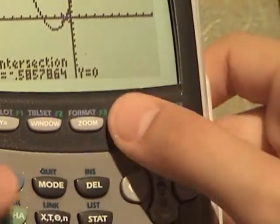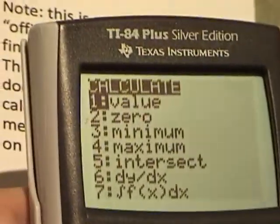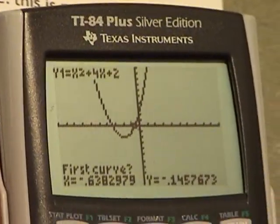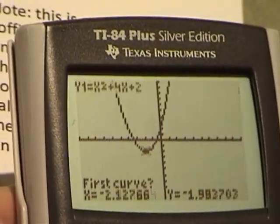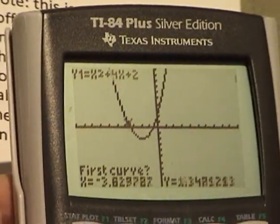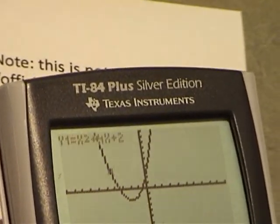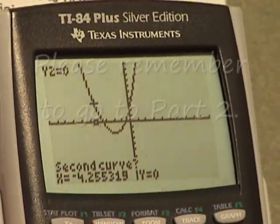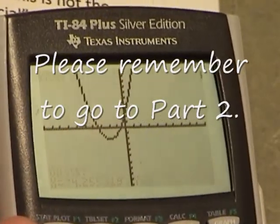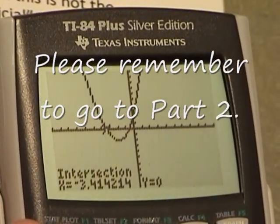Then, press second trace again. 5. Now, go to the other side using your arrow keys. You can stop at any point on the graph on this other side. I'm just going to pick here. The second curve. Just press enter. Then, enter again, and enter again.